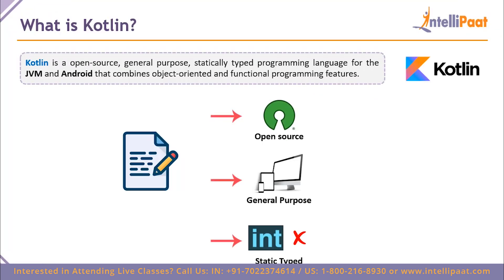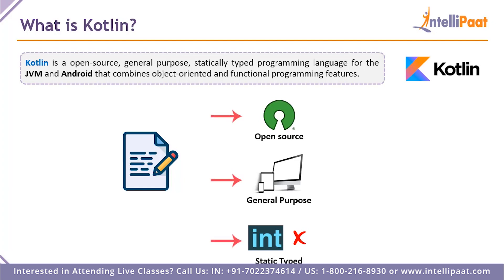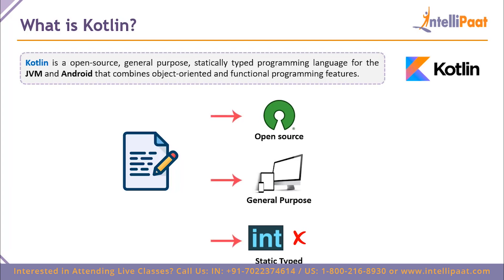What is Kotlin? Kotlin is an open-source, general-purpose, statically typed programming language for use with the Java Virtual Machine and Android. It combines object-oriented and functional programming models — that is the biggest advantage Kotlin gives us as a programming language. The key takeaways are: it's open source, it's a general-purpose language supporting both OOP and functional programming, and it is statically typed.